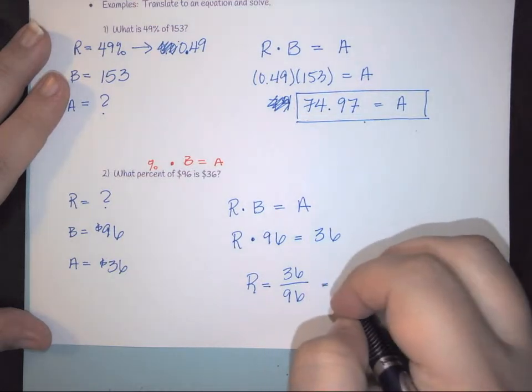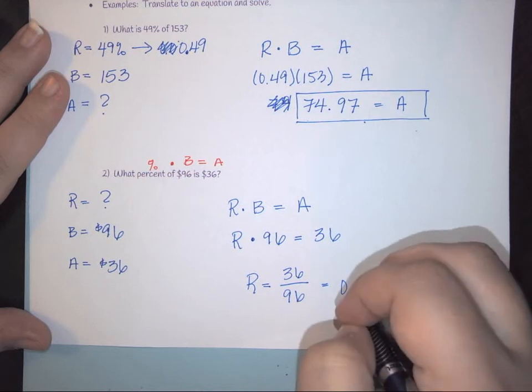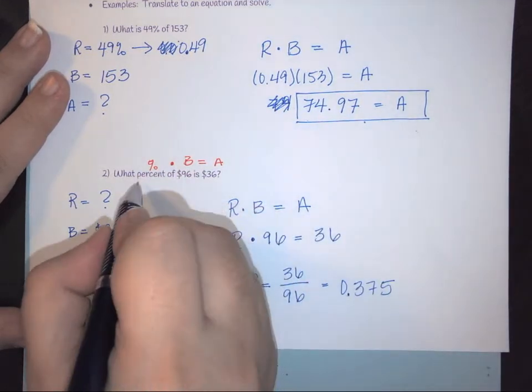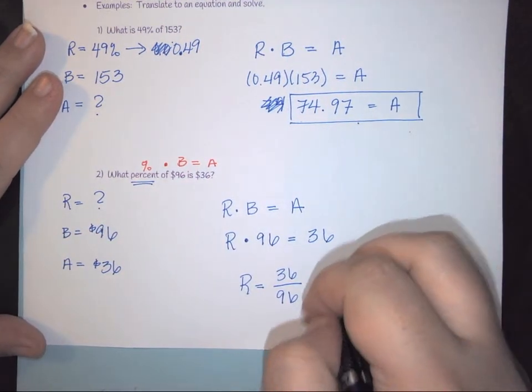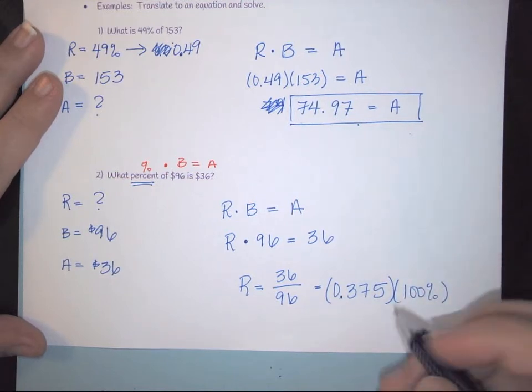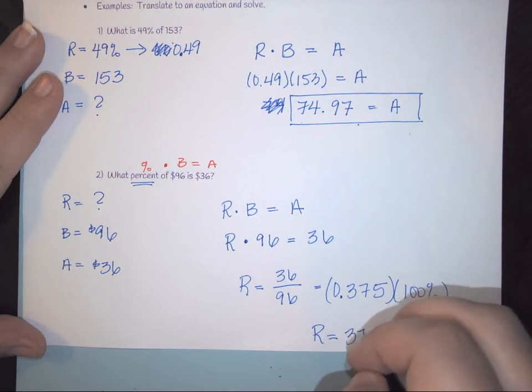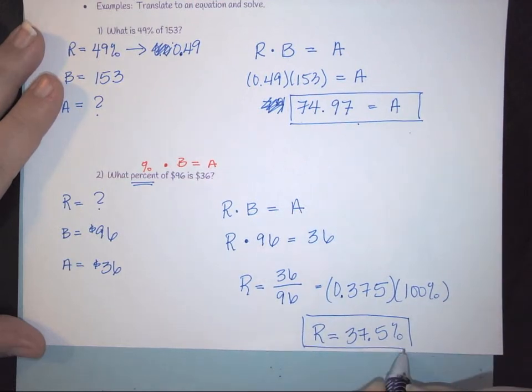So here we're going to get 0.375. But then what we have to remember is that we're looking for a percent. So we need to take this, and we need to multiply it by 100%. So we find out that your rate is equal to 37.5%. And this is the answer we want.